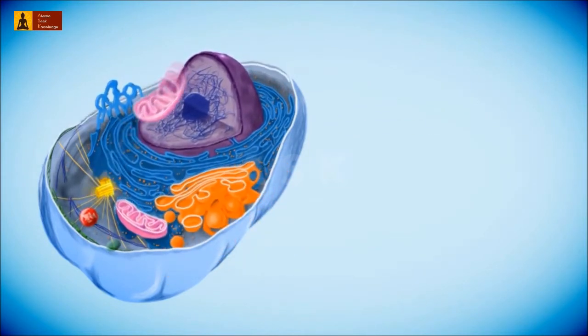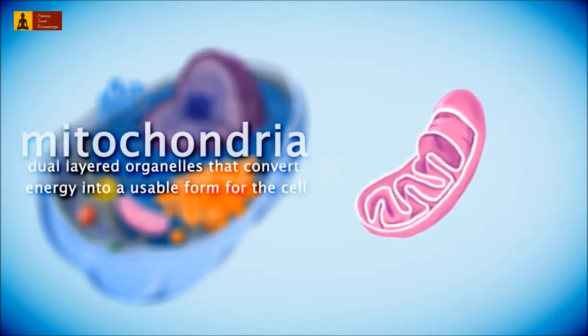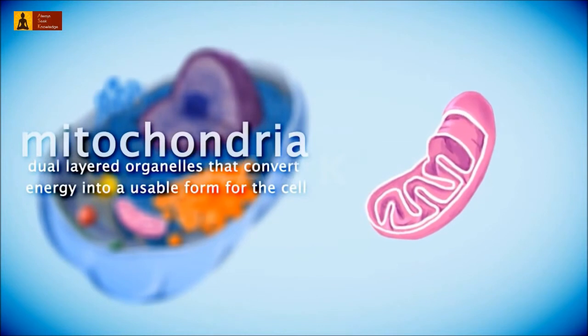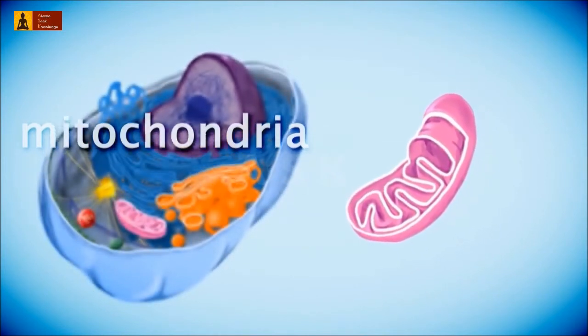Animal cells convert food into chemical energy and ATP through the mitochondria. This process is known as cellular respiration. Mitochondria are complex, dual-layered organelles that serve as the site of cellular respiration.